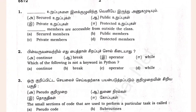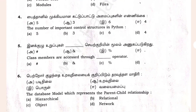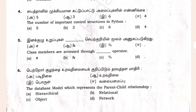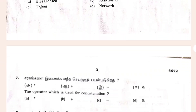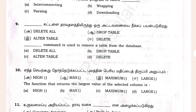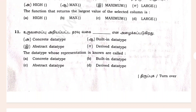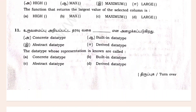First one. Second one. Third one. Fourth one. Fifth one. Sixth one. Eight. Nineteen.